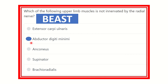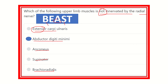Now applying the mnemonic: extensor carpi ulnaris is an extensor, so it is supplied by the radial nerve. Anconeus corresponds to A, supinator to S, and brachioradialis to B. Therefore, abductor digiti minimi is not supplied by the radial nerve — it is supplied by the ulnar nerve. So our final answer is abductor digiti minimi.